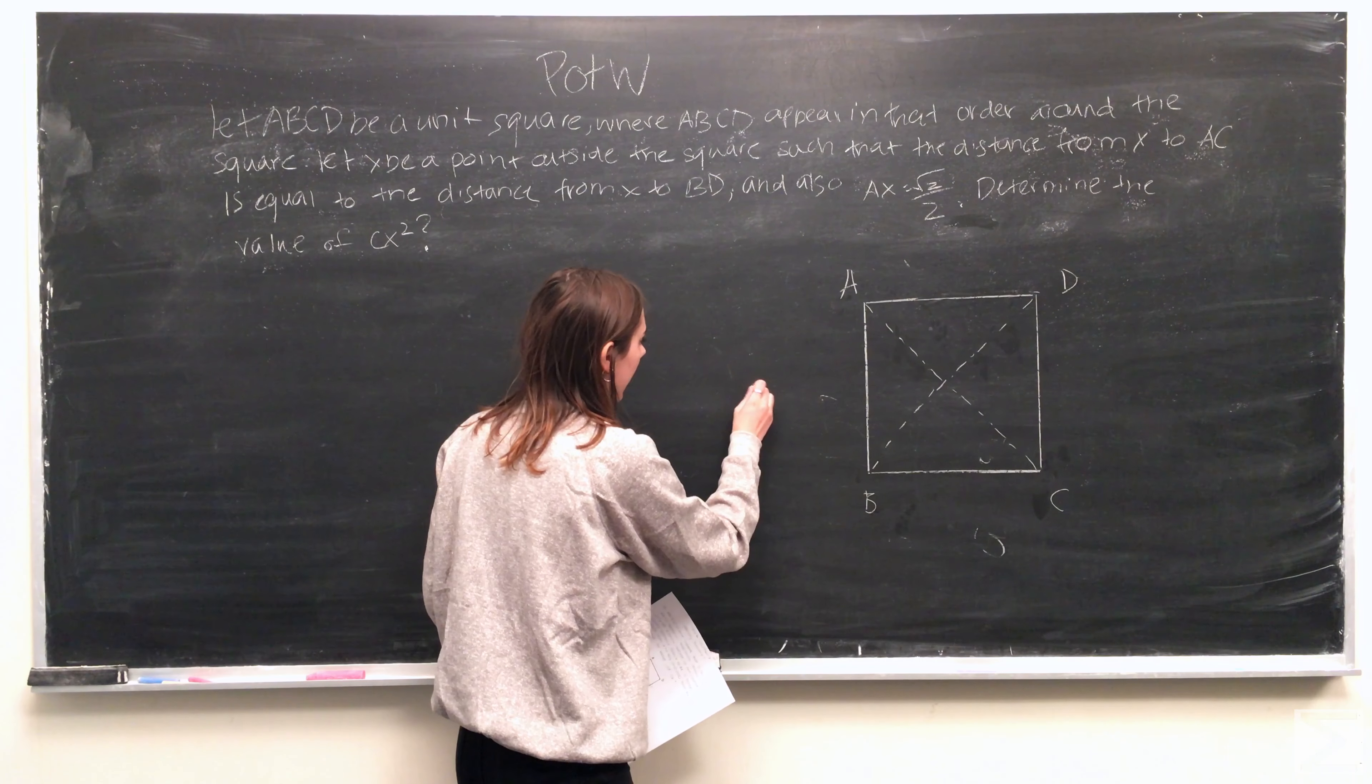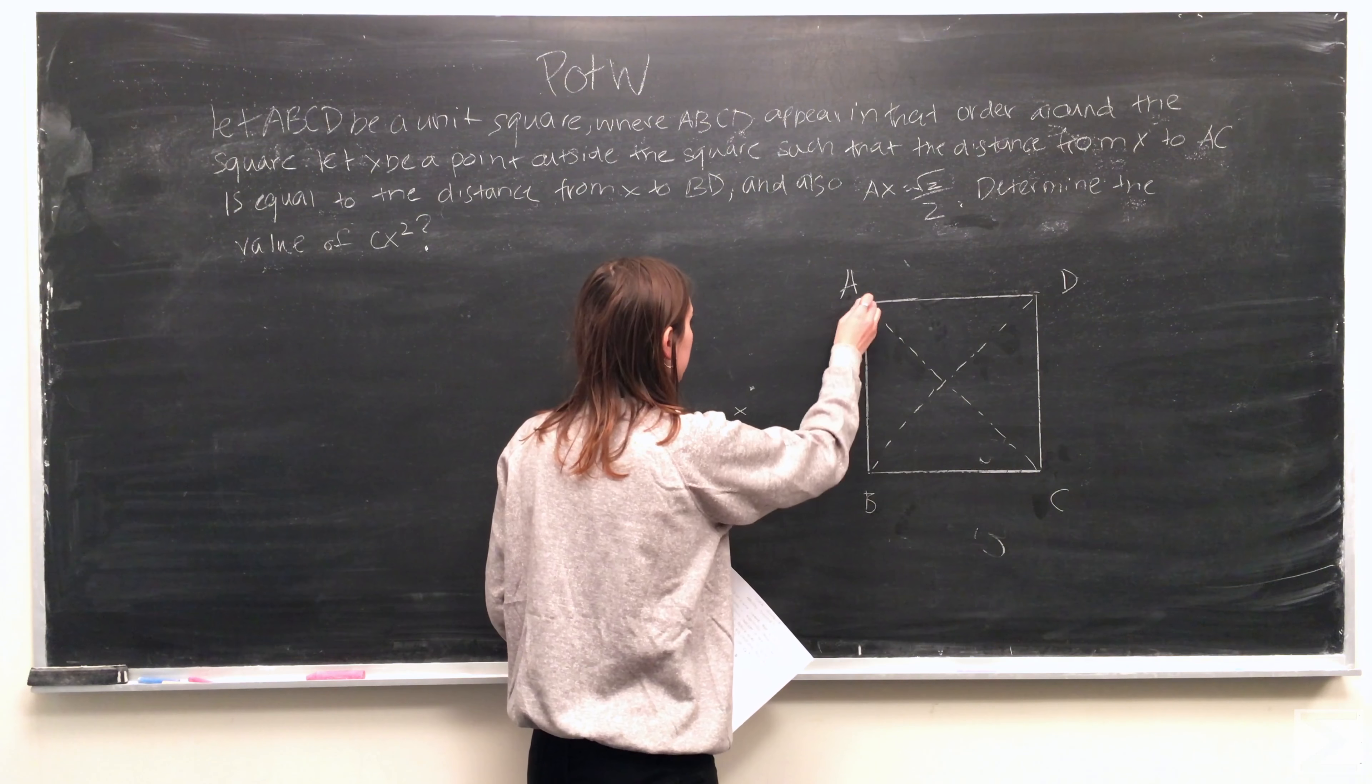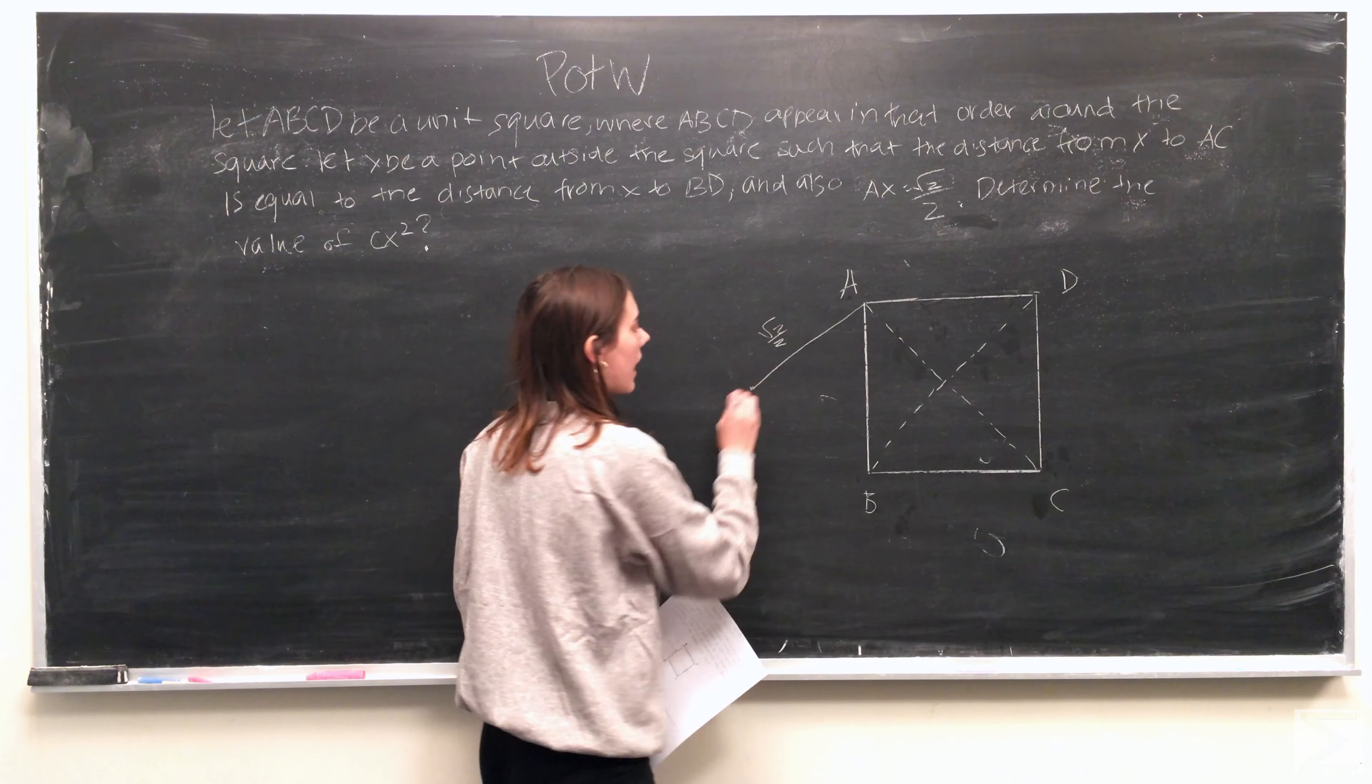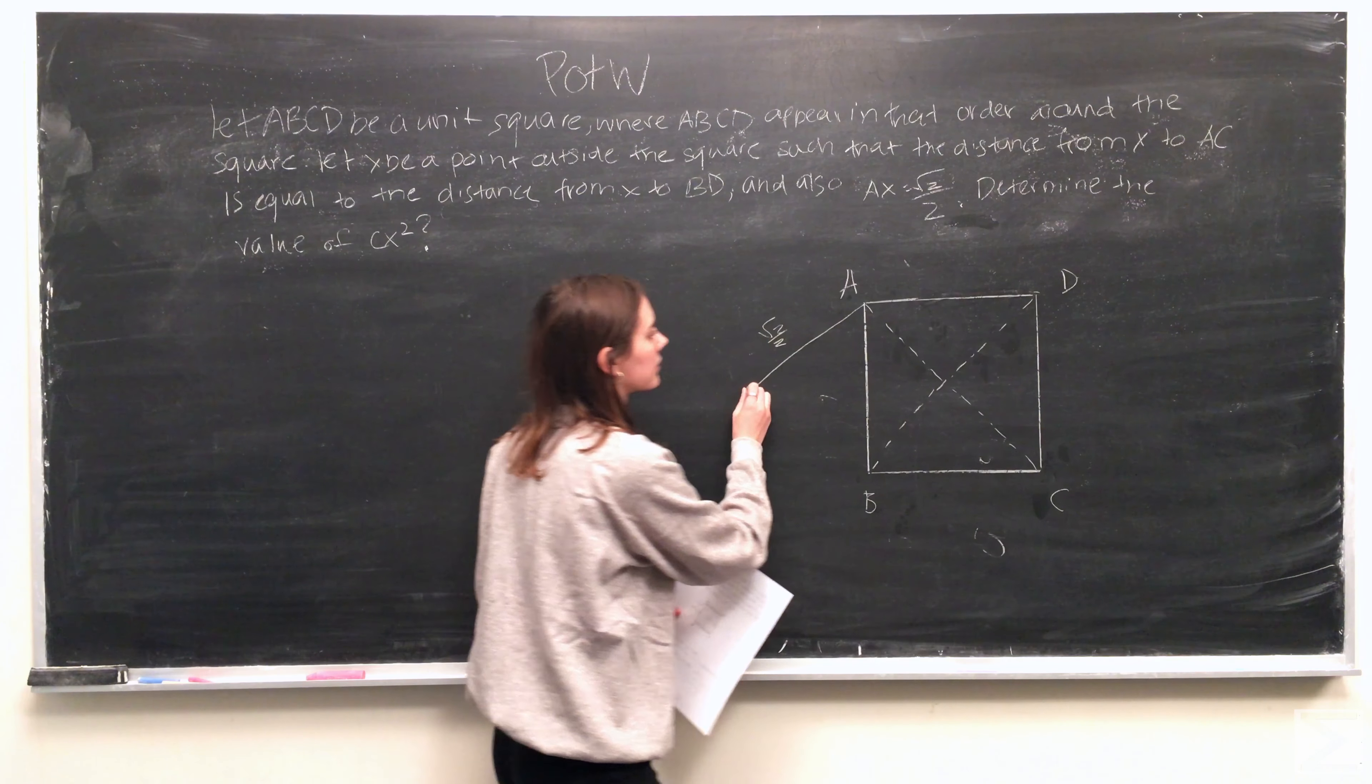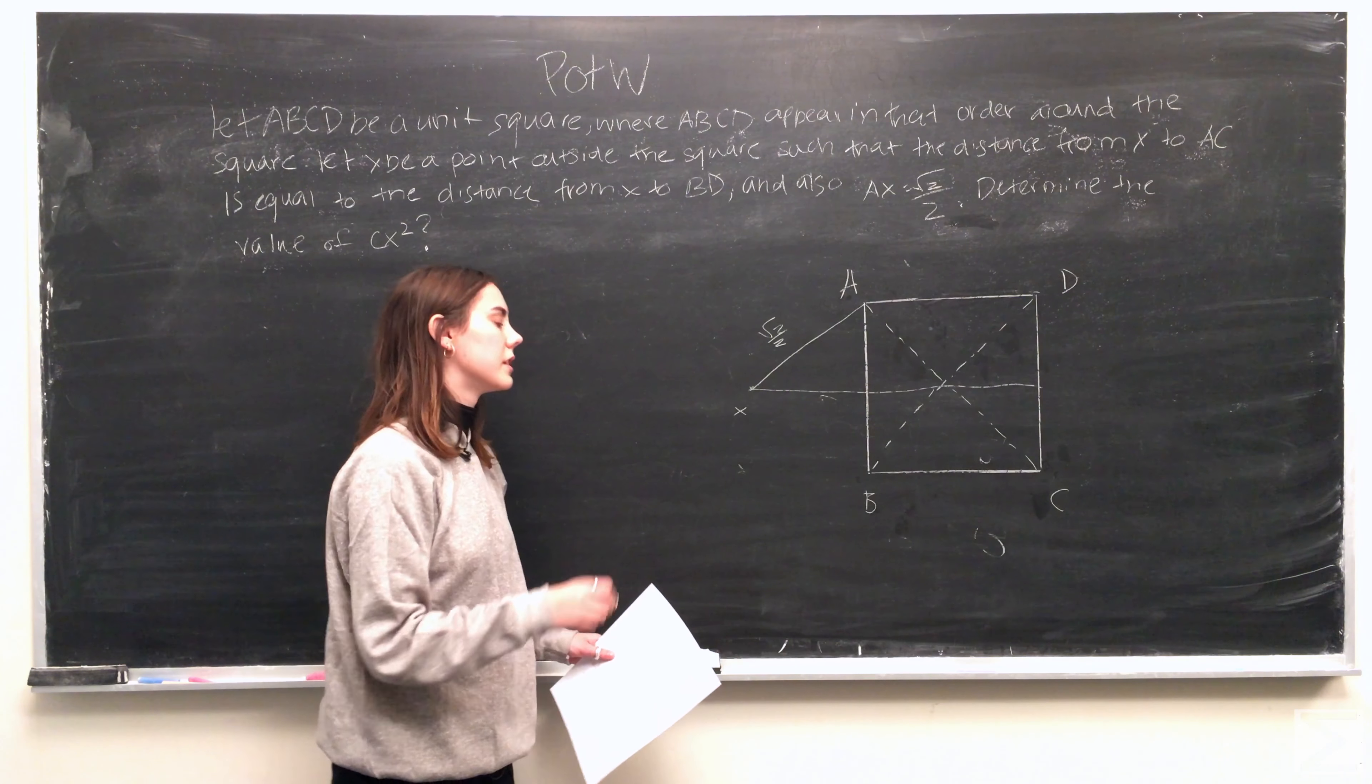So if we place x to the left of the square, what we first know is that ax is equal to the square root of 2 over 2.